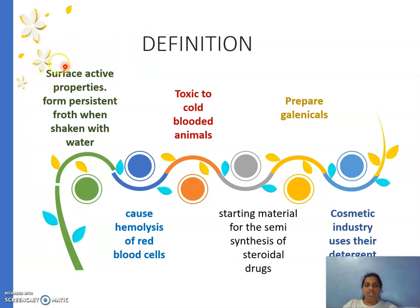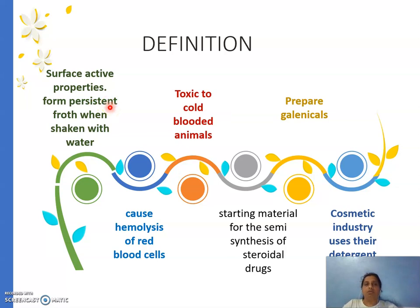What is the definition? Saponins are soap-forming compounds — they have surface active properties and form a persistent froth when shaken with water. Remember the word persistent: any compound shaken with water gives foam, but when saponin is added and shaken, the foam remains constant for one minute. Hence we use the word persistent. Because of this property, saponin is used as a detergent in the cosmetic industry.